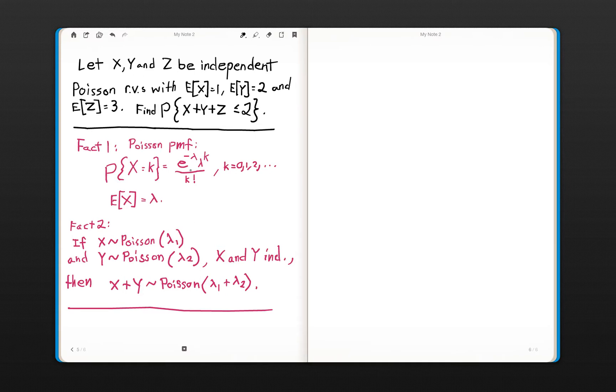The expected value of X is lambda. It's actually the parameter of the Poisson probability mass function. So this is a formula you must know, and not something you want to waste time trying to figure out. Please commit that to memory.